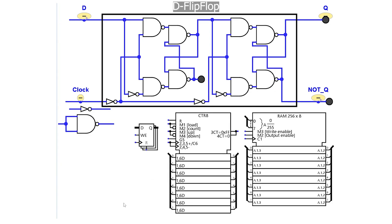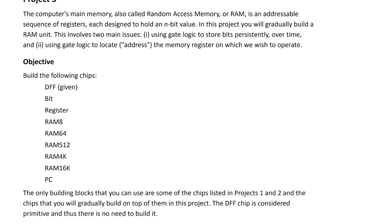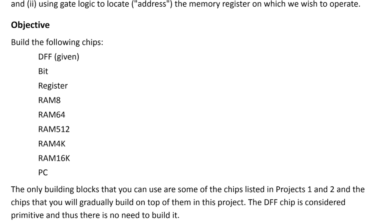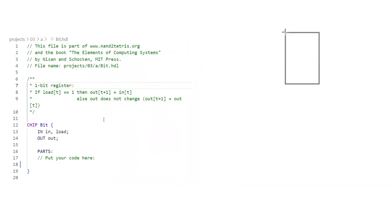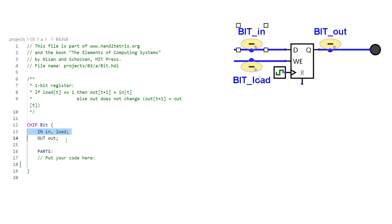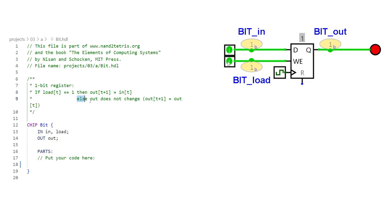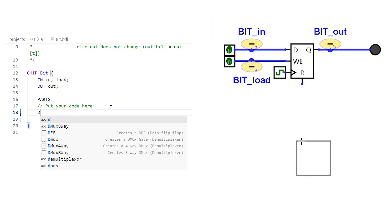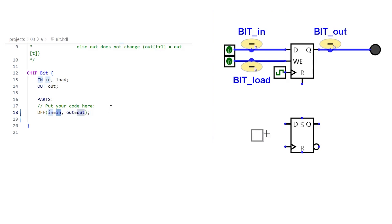We have used NOT gates as well but they can also be replaced by NAND gates. This D flip-flop can now be used to make some of the most important components of any computer. We'll see how by completing the NAND to Tetris project 3, where D flip-flop is a primitive and already available. We start with the bit chip, also called a one-bit register, which is capable of loading and storing a single bit. It has two inputs — in and load — one output out, and is implicitly clocked. When load is on, the value of the in signal is stored; when load is off, even if the signal changes, its output will always be the previously stored bit.